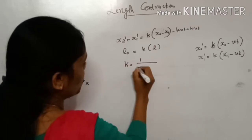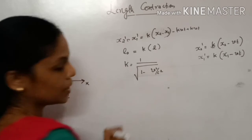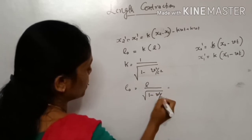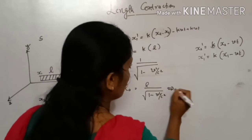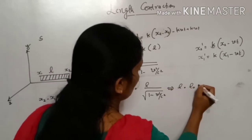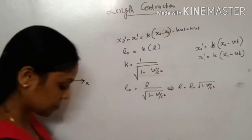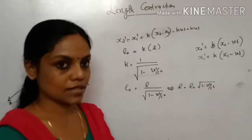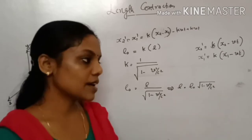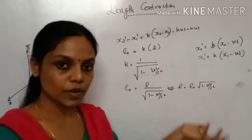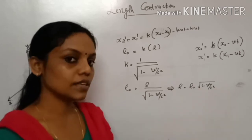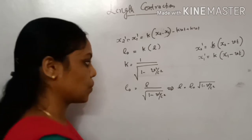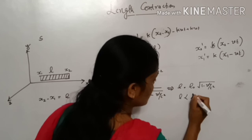The value of K is 1 divided by the square root of (1 - V²/C²). Therefore, L0 = L / √(1 - V²/C²), which means L = L0·√(1 - V²/C²). Since V is always less than C, the quantity (1 - V²/C²) is always less than 1, so L is always less than L0.